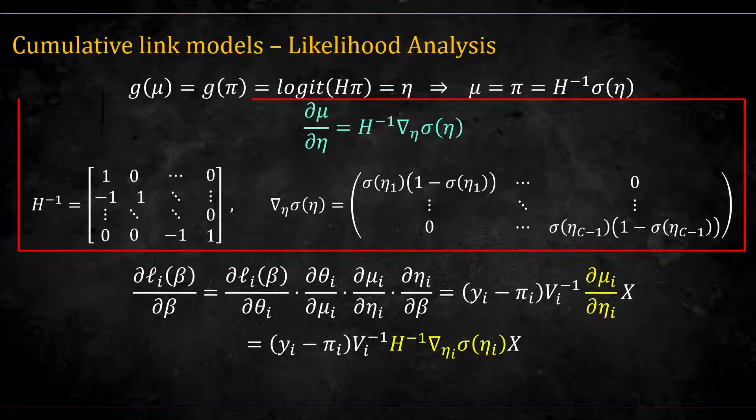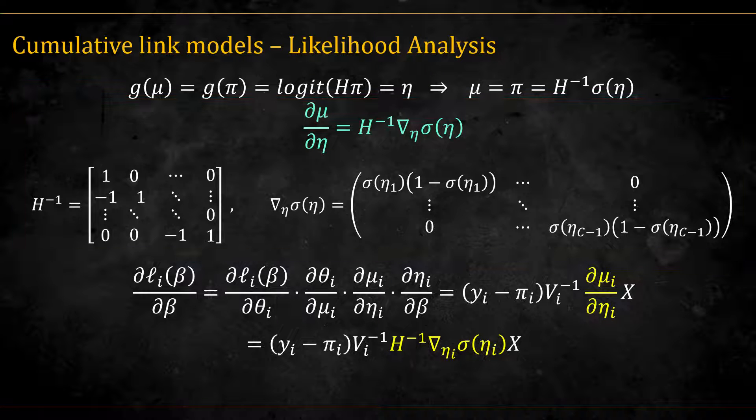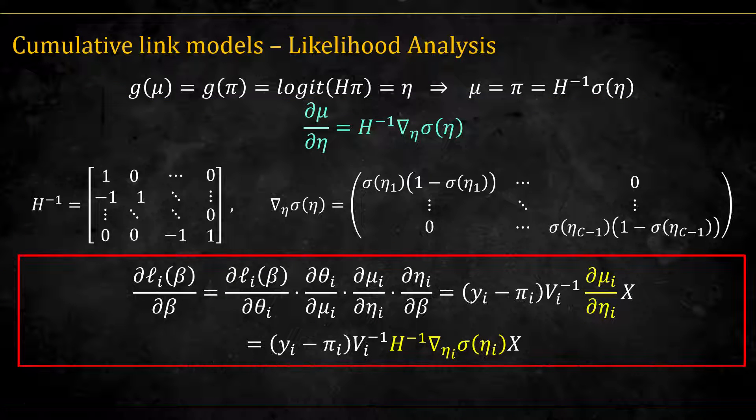The derivative is given here. Since we take the derivative of a vector by a vector, we get a matrix. But in our case, it's diagonal. So, putting it all together, we get this.